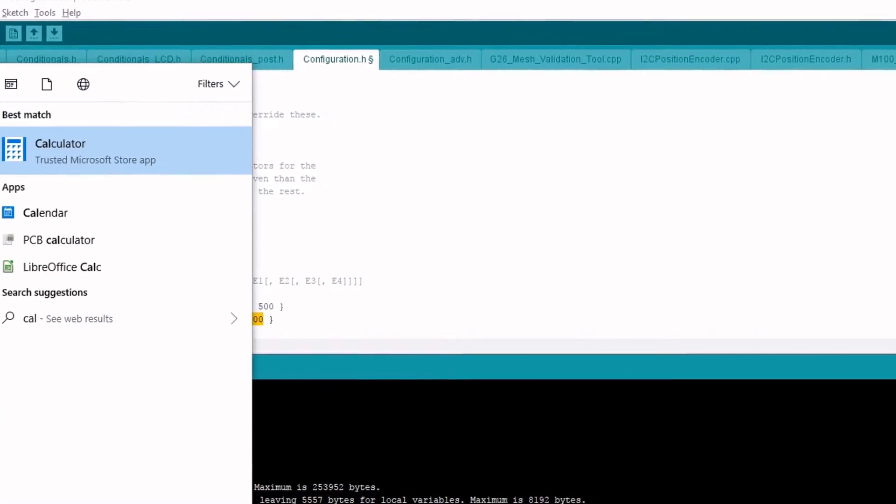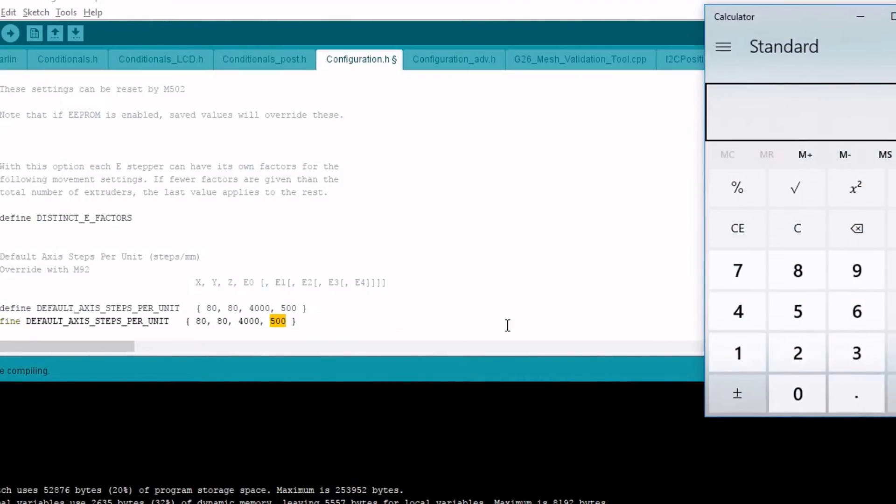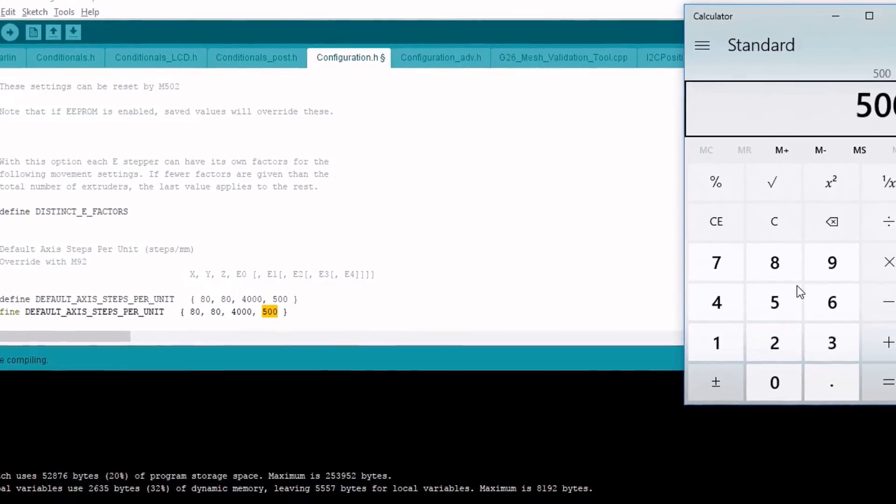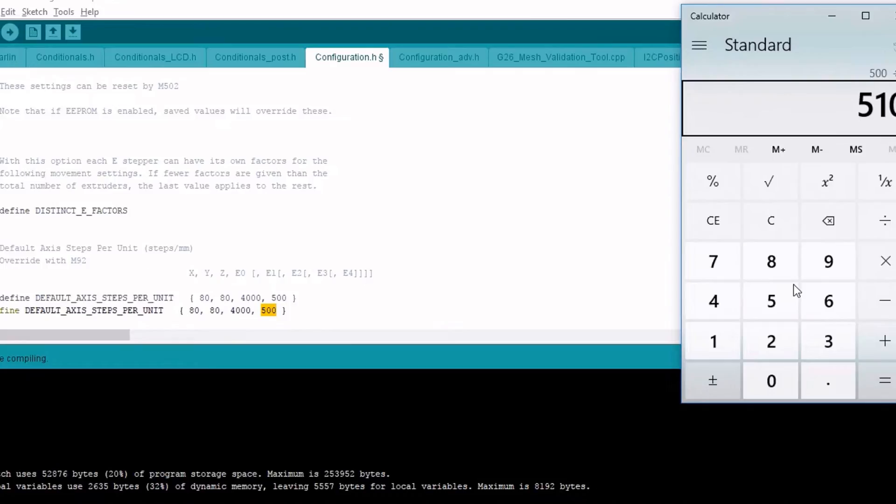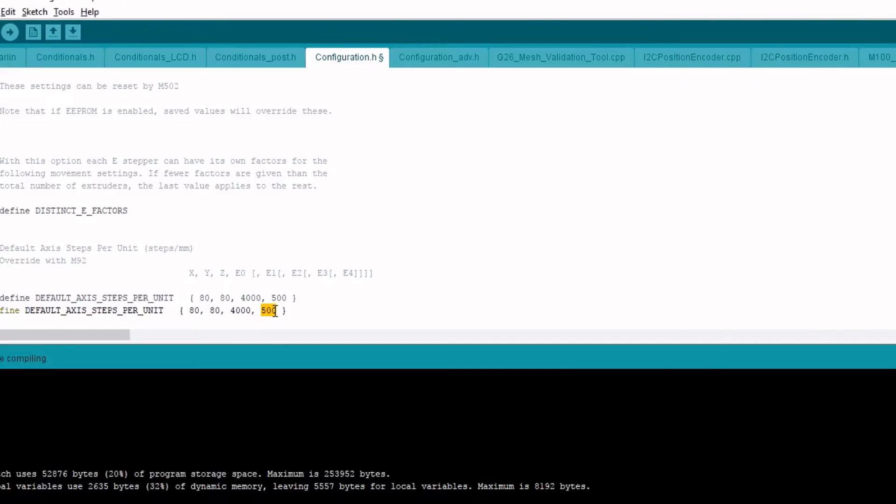So we're going to open up the calculator. In the calculator, we're going to put 500, divide it by our actual value of 510. We get 0.9803. So we're going to place that value in the firmware as 98.04 because we're going to multiply it by 100. And then we're going to compile and upload.